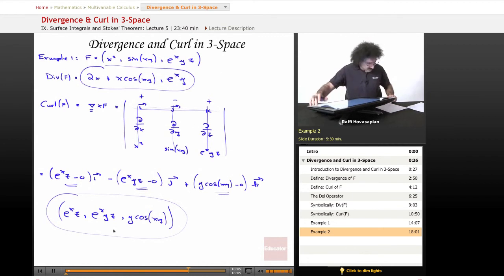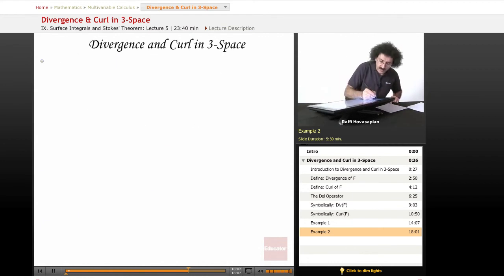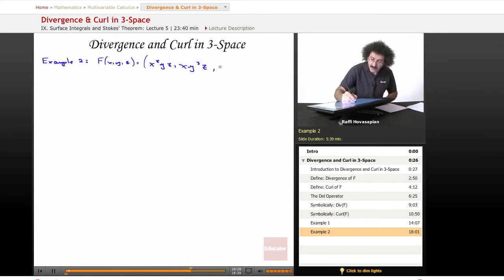Okay, let's do another example. So example two. F of x, y, and z is equal to x squared yz, xy cubed z, and xyz to the fourth.